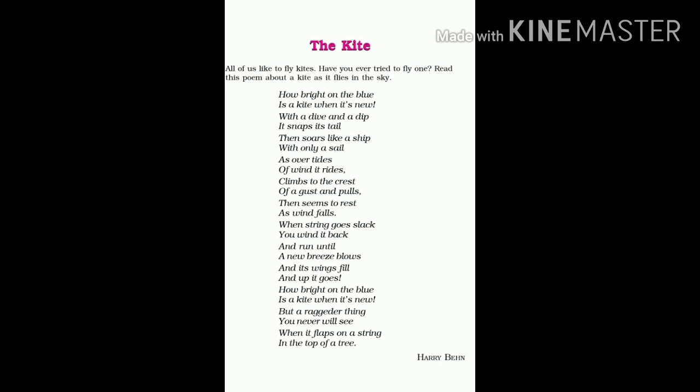'How bright on the blue is a kite when it's new, but a raggedy thing you never will see when it flaps on a string in the top of a tree.' The poet repeats the starting lines, but the difference is that here in the last four lines he mentions the state of the kite when it gets stuck on a treetop, becoming ragged — torn, tattered, and worn out — giving it a look not liked by anyone.